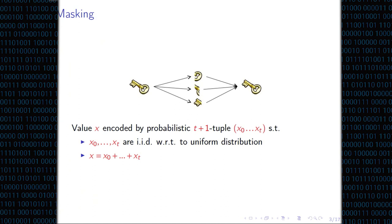Masking is a countermeasure inspired from secret sharing. Essentially, what you want to do is protect your crypto key by cutting it into chunks. More generally, every value you will be computing — instead of manipulating one value, you will manipulate a probabilistic encoding. A probabilistic encoding is a tuple of values x0 to xt, and it is a valid encoding of x if the sum of all the shares recovers x, and each variable is uniformly distributed and otherwise independent.